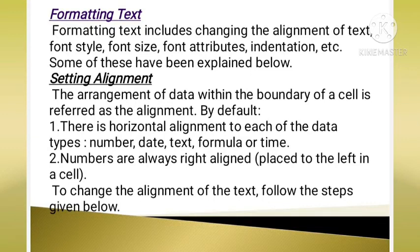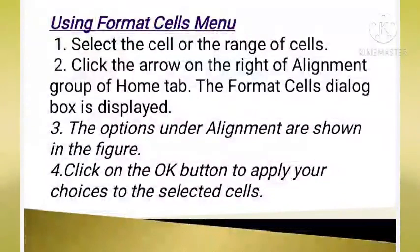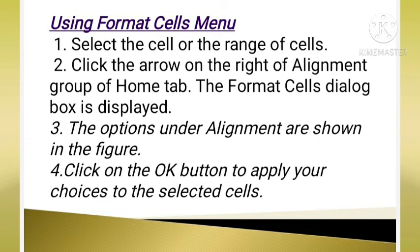To change the alignment, we have to follow few steps. We will now learn to use format cell menu. First step, select the cell or the range of the cells. Second, click the arrow on the right of alignment group of home tab. The format cell dialog box is displayed.